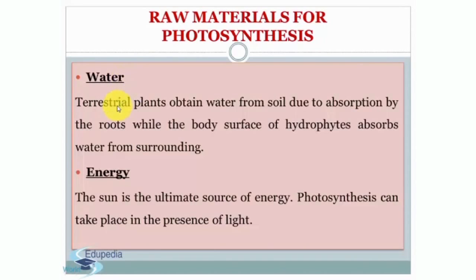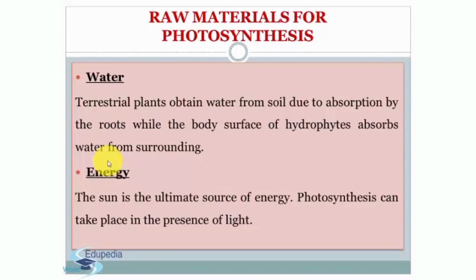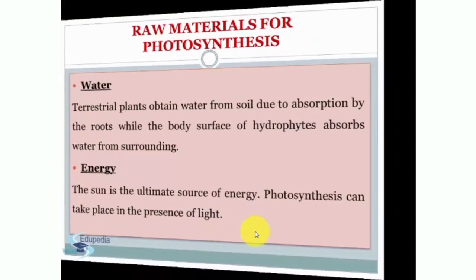Next is water. Terrestrial plants obtain water from soil through absorption by the roots, while the body surface of hydrophytes absorbs water from their surroundings. Then there is energy — the sun is the ultimate source of energy, and photosynthesis can take place only in the presence of light.